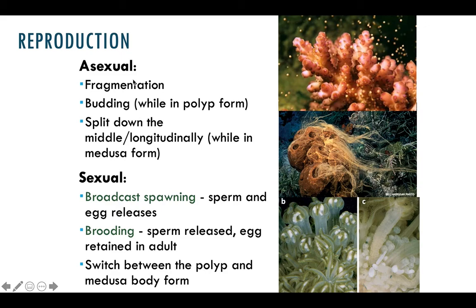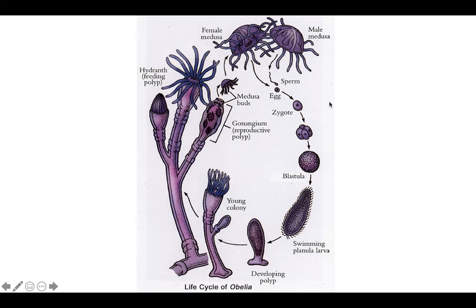Jellyfish and other cnidarians can reproduce asexually as well as sexually. They can exhibit fragmentation and budding — if they're in polyp form they can split right down the middle, if they're in medusa form. Sexually, they do broadcast spawning, releasing sperm and egg into the water, or brooding where sperm is released and eggs are inside the organism. They also switch frequently between polyp and medusa body form.